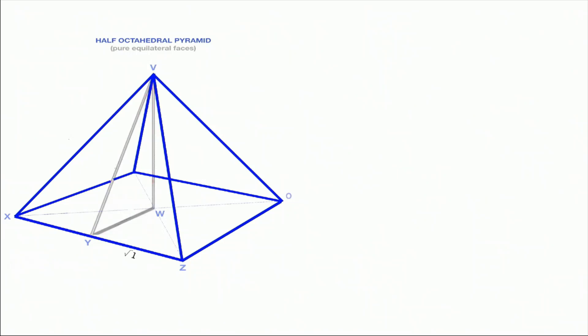I'm putting in these measurements here: the half base would be square root of one, the half base there square root of one, the side is two times the square root of one, the half diagonal is root two, the height is root two.